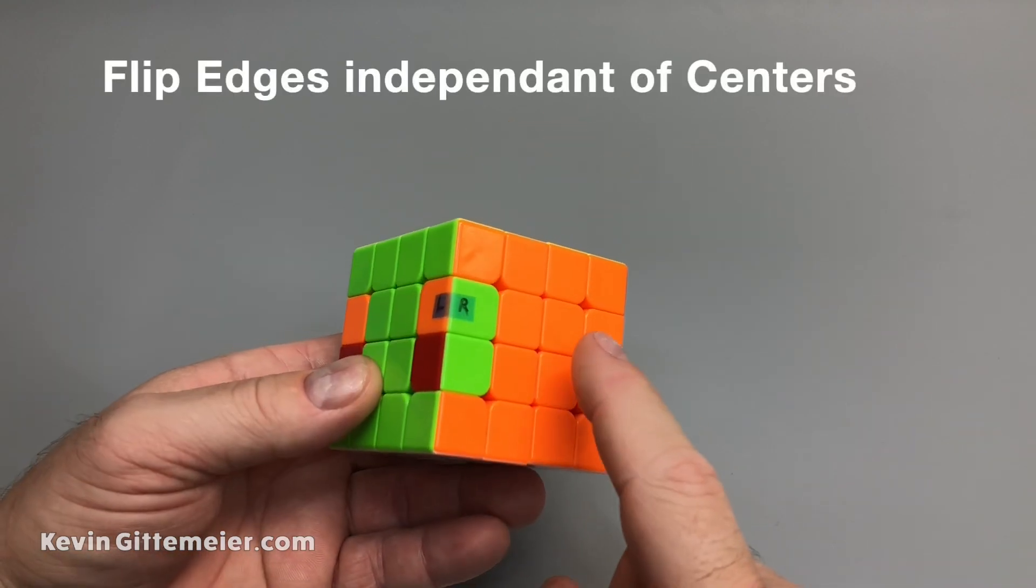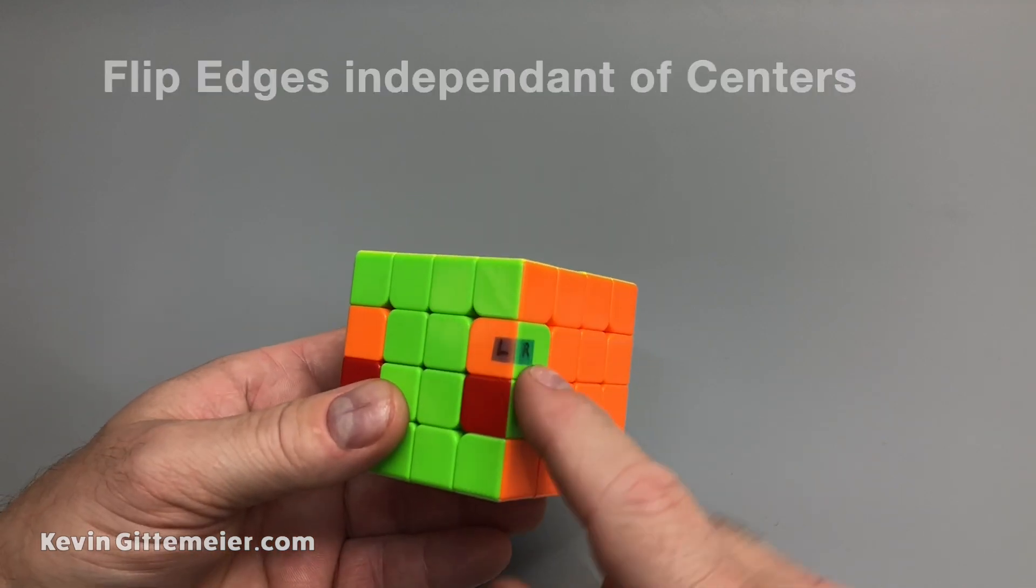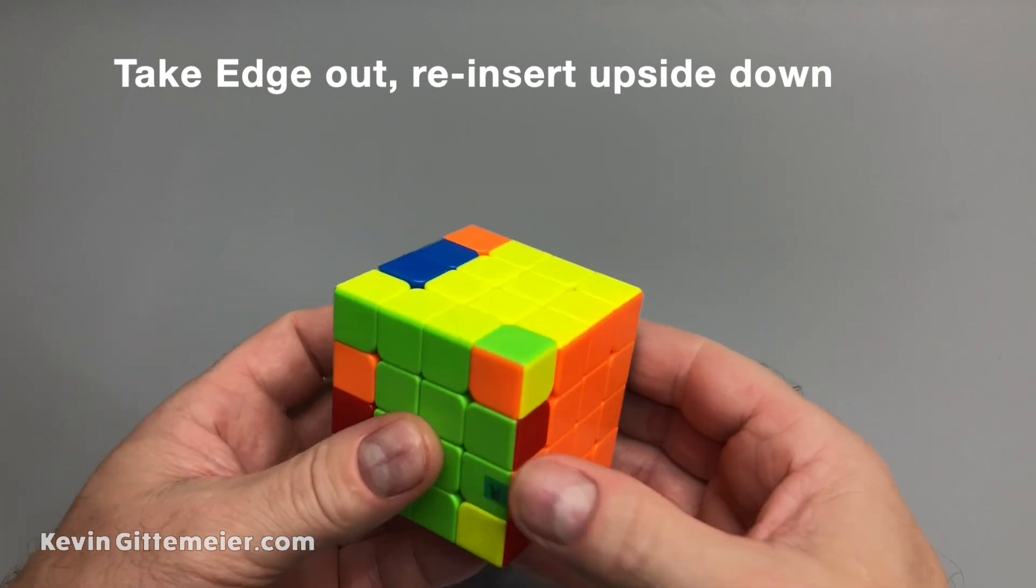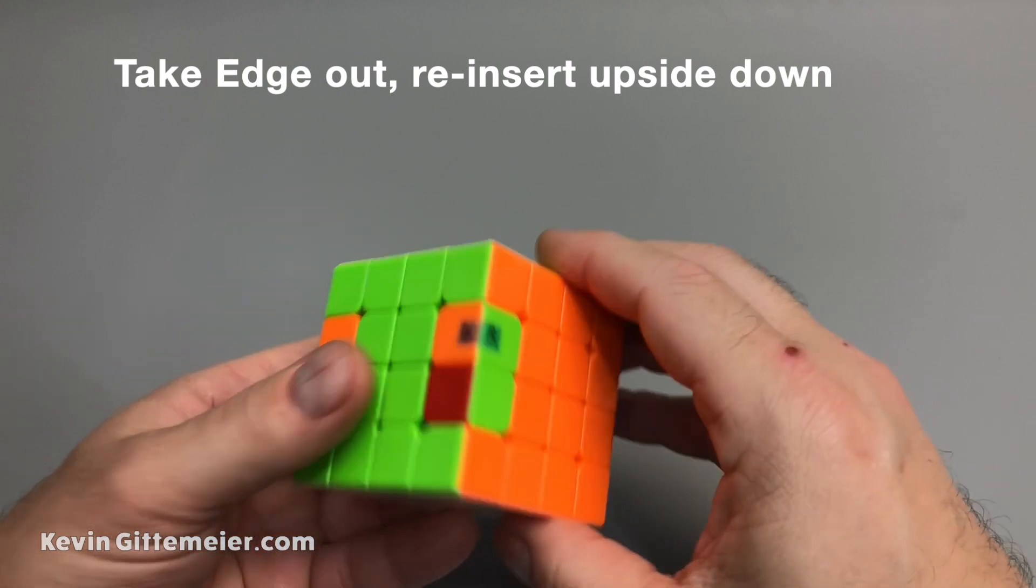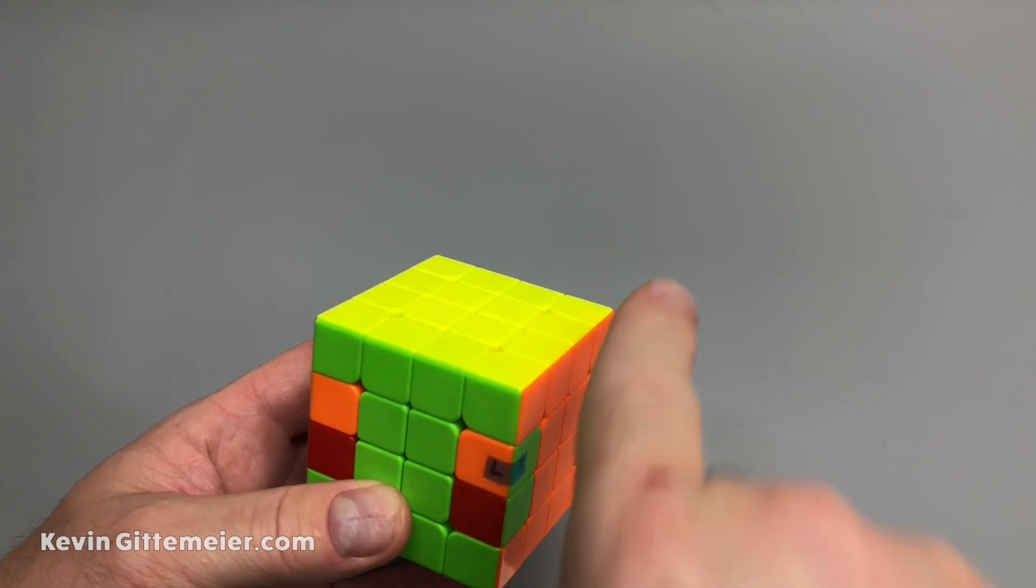We can flip these edges independent of the centers with a few different methods. But the easiest is just beginner method of taking this edge out and reinserting it upside down. Now, when I take that out, it doesn't matter if I take it out and set it that way or this way.